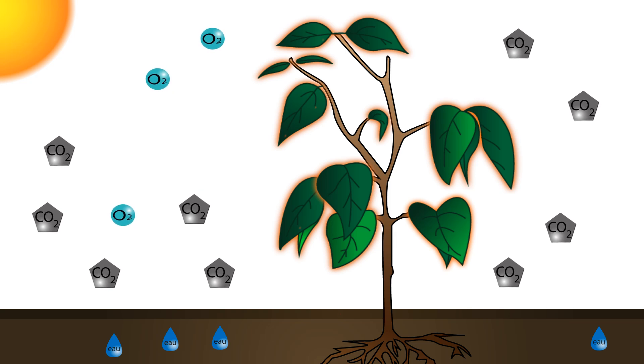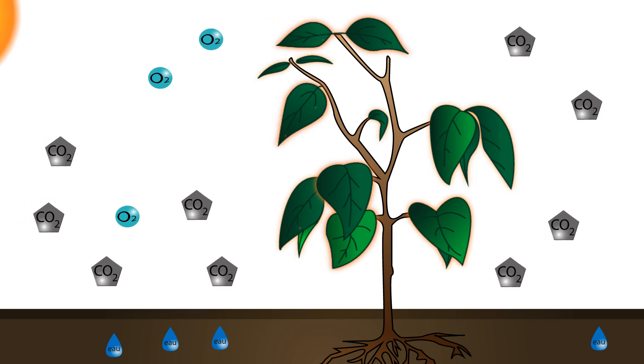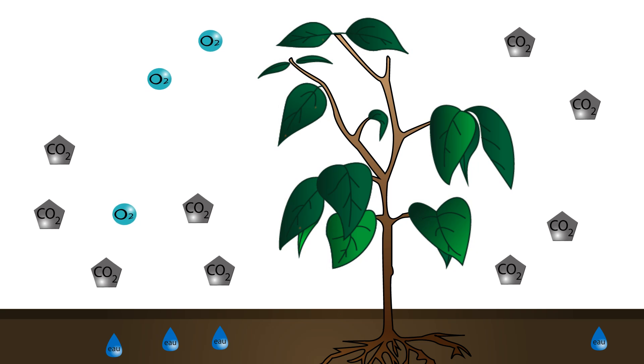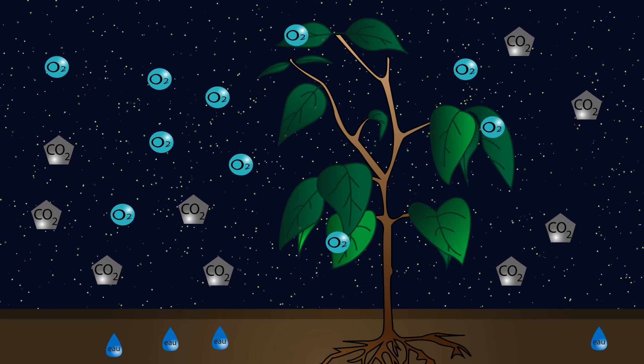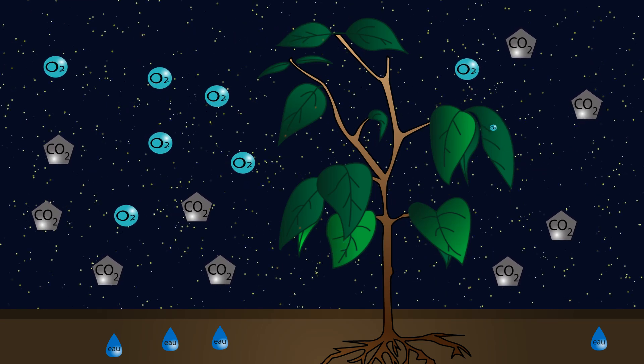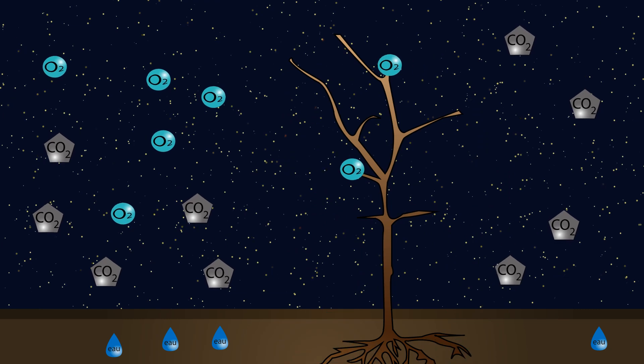This is why a plant produces oxygen only in daytime, when there is enough light and only when it has leaves. In night time, plants only breathe and therefore only consume oxygen, as well as in winter when leaves have fallen.